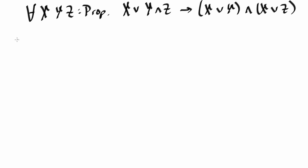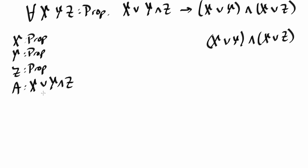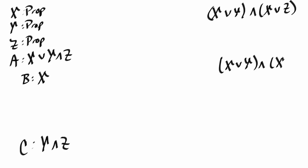Now let's prove the proposition. We start by assuming we have three propositions x, y, and z. We'll have assumption a: x or (y and z). The claim we need to prove is (x or y) and (x or z). We can start by considering the two cases given by assumption a. In one case we have x, and in the other case we have y and z. In the first case let's call the assumed proof of x as b, and in the second case we'll call the assumed proof of y and z as c. In both cases we need to prove the same claim: (x or y) and (x or z).